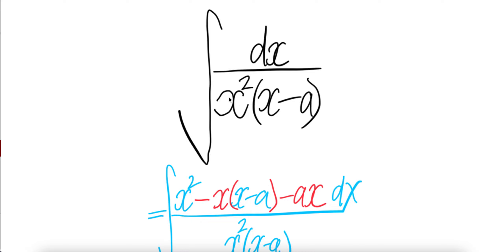We need to remove the x squared term — there's no x squared — so we need to multiply by negative x. This and that cancel. With this you get ax, but there's no ax, so you have to remove the ax.